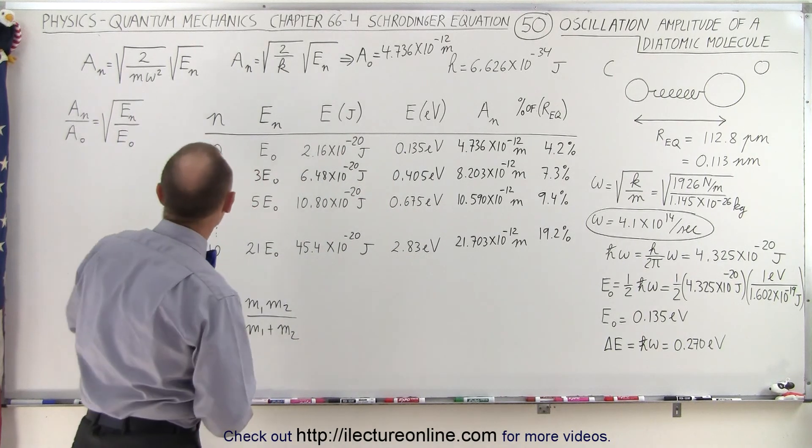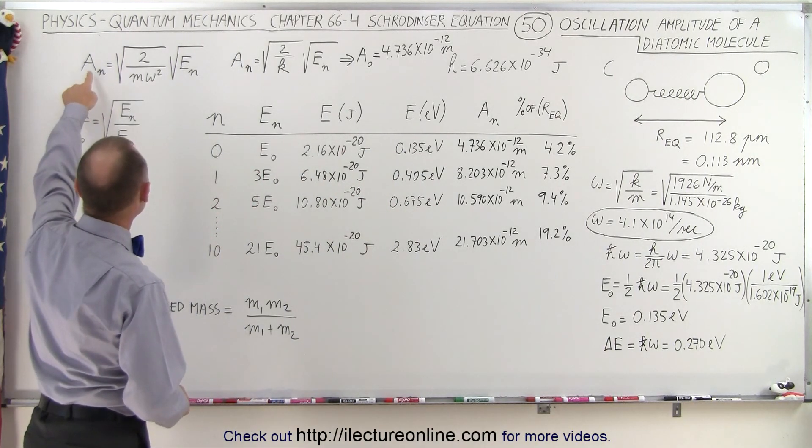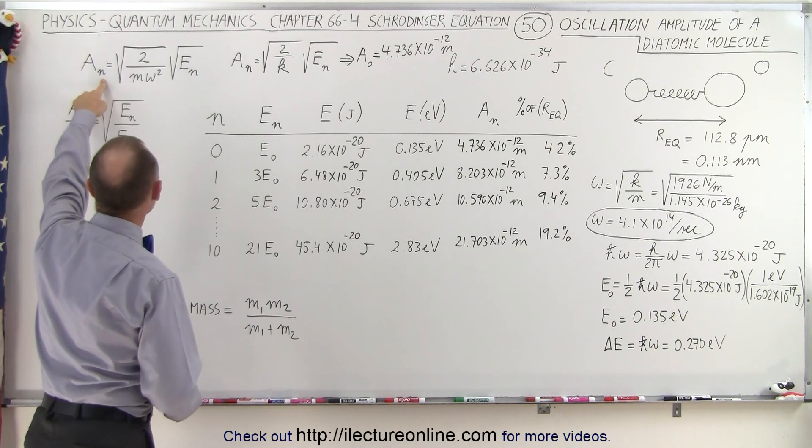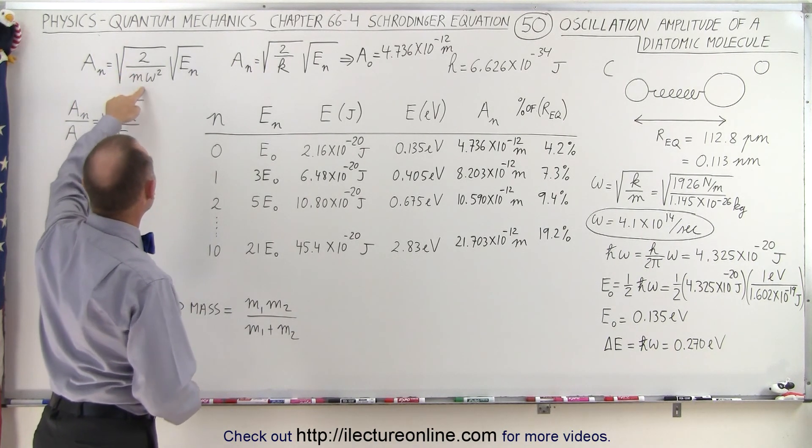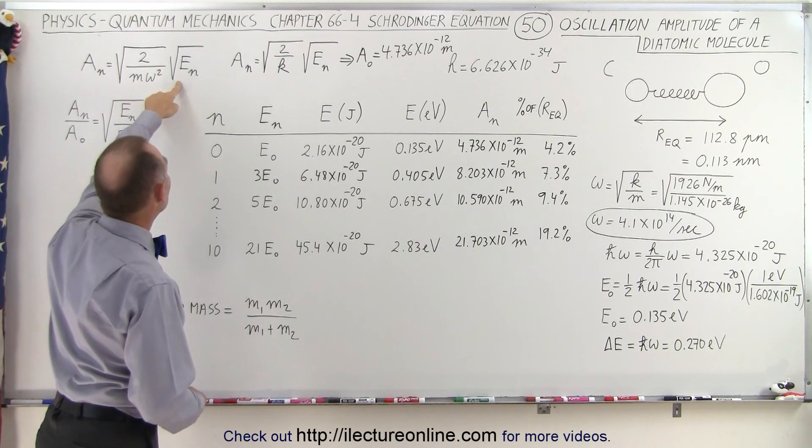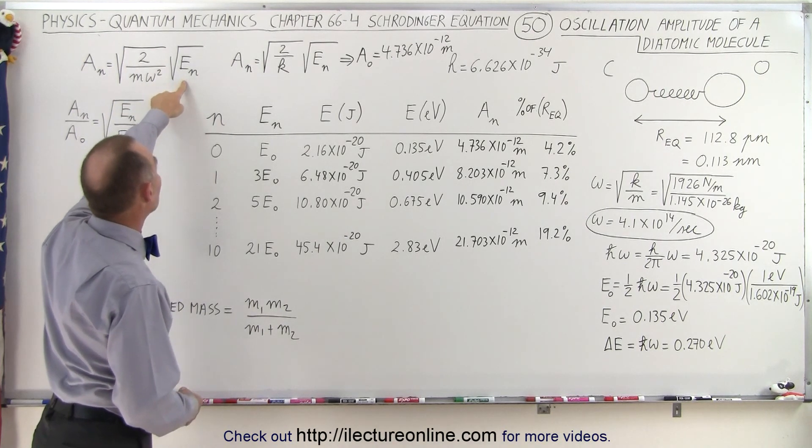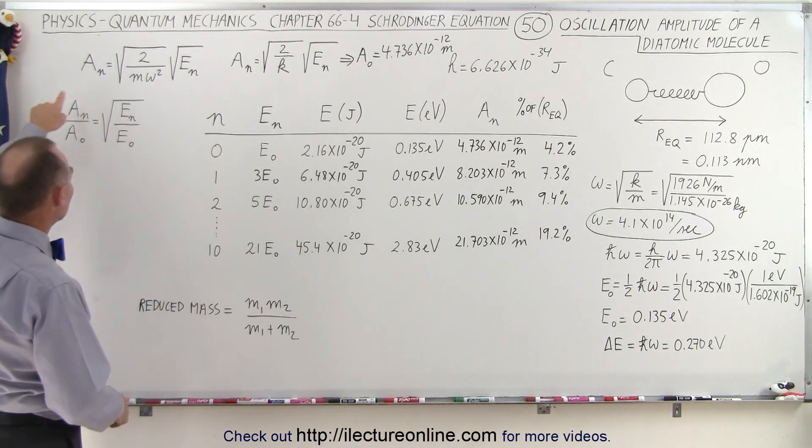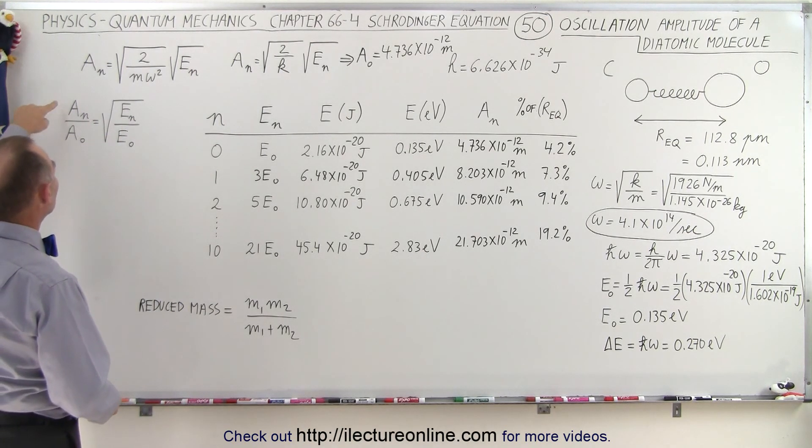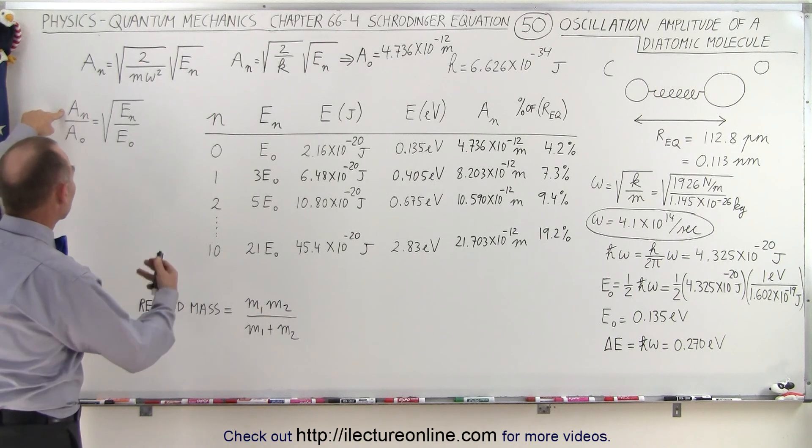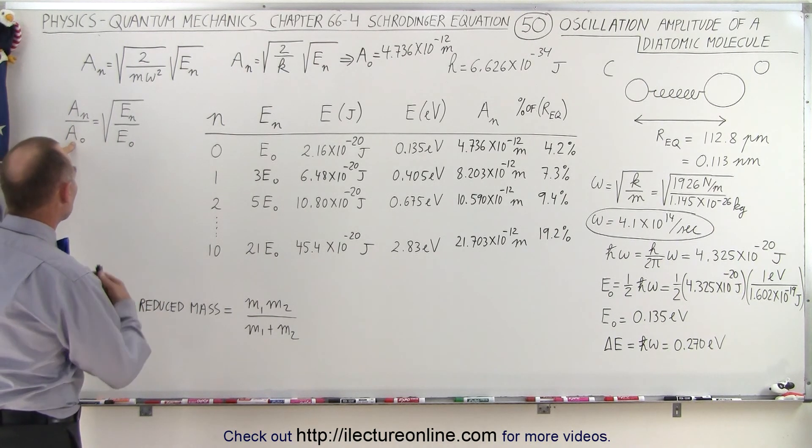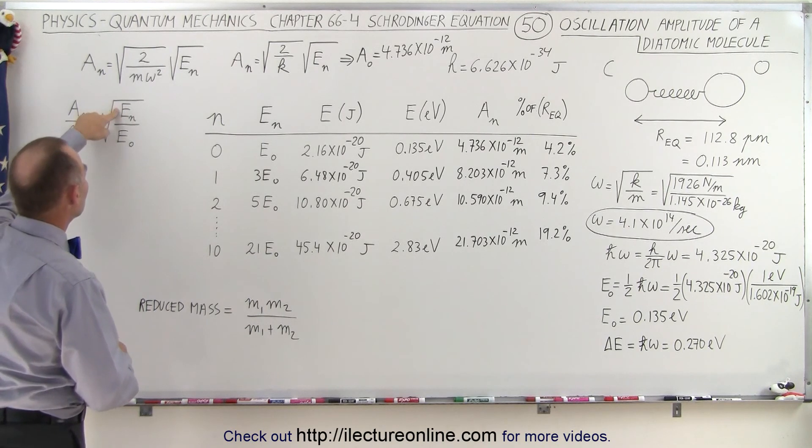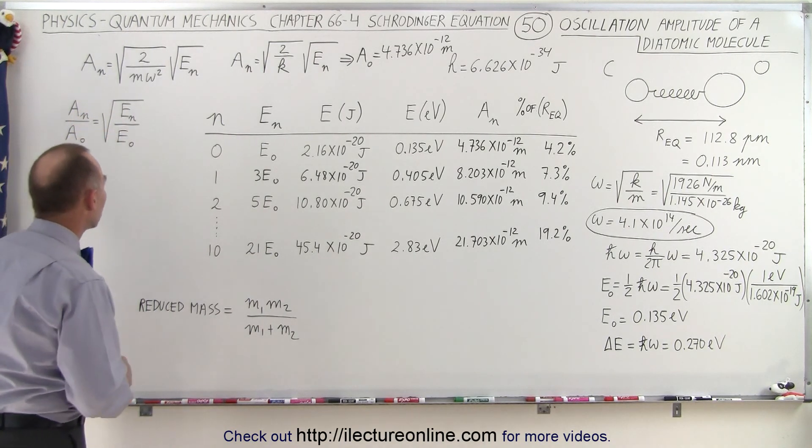Now also we have to keep in mind that we can calculate the amplitude at any quantum level or quantum number n to be equal to the square root of 2 divided by k, which is m omega squared, times the square root of the energy level at that quantum number. Or we can also, as we saw in the previous video, know that the ratio of the amplitude at any quantum level relative to the amplitude at the zero energy level is equal to the square root of the ratio of the energy at that level divided by the energy at the zero level.